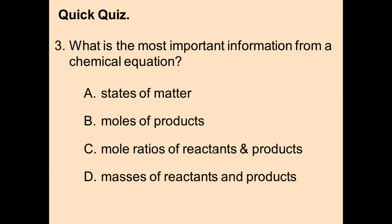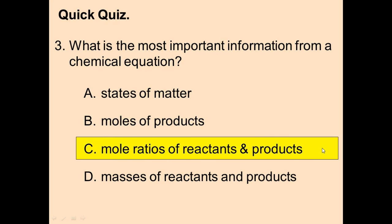Question 3: What is the most important information from a chemical equation? The answer is C — the mole ratios of reactants and products. The reason is that we need mole ratios to convert from one substance to another, and we'll be using this throughout the rest of the unit.